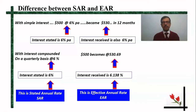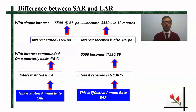In the previous lesson, we saw the difference between the stated annual return and the effective annual return. We also saw how $500 gives an extra $30 or $30.69 at the end of 12 months.